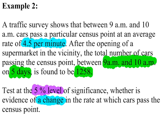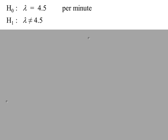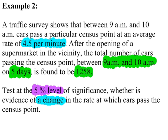Example 2. The value of lambda here is 4.5 for a one-minute interval and we're looking for a change to this value. So H0 and H1 for a two-tailed test are these. Now the evidence given is 1,258. So we need to test this value.